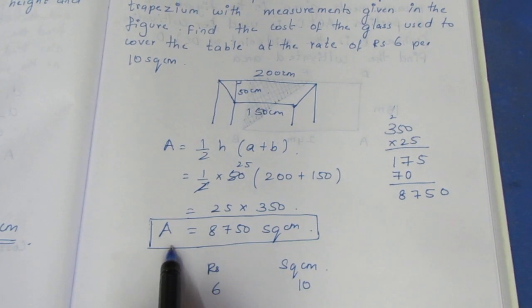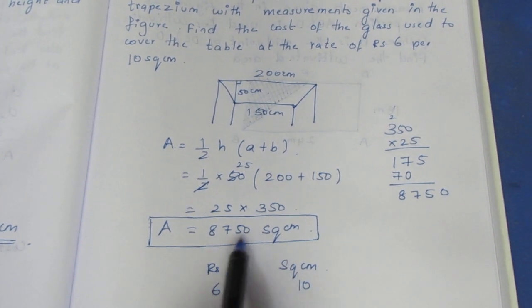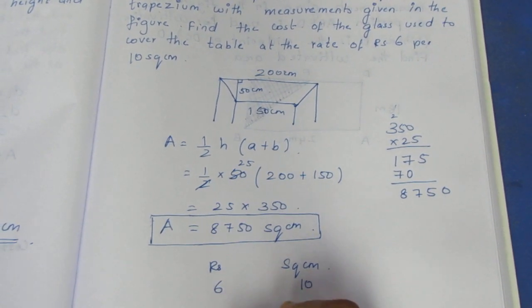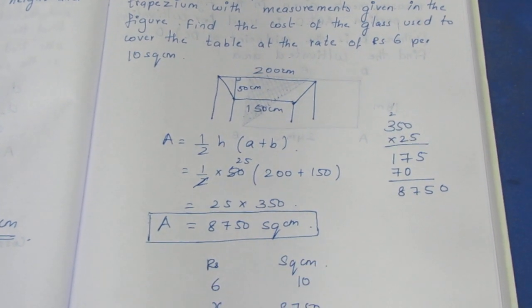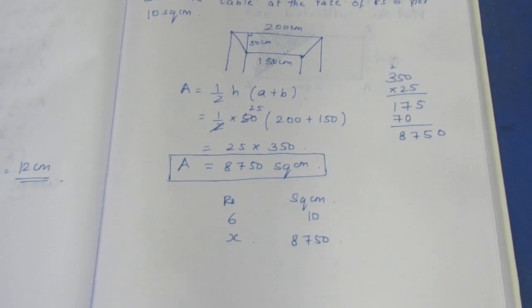Now, how much area do we have? The area is 8,750 square cm. For this area, the cost will be x rupees. Now we cross multiply.